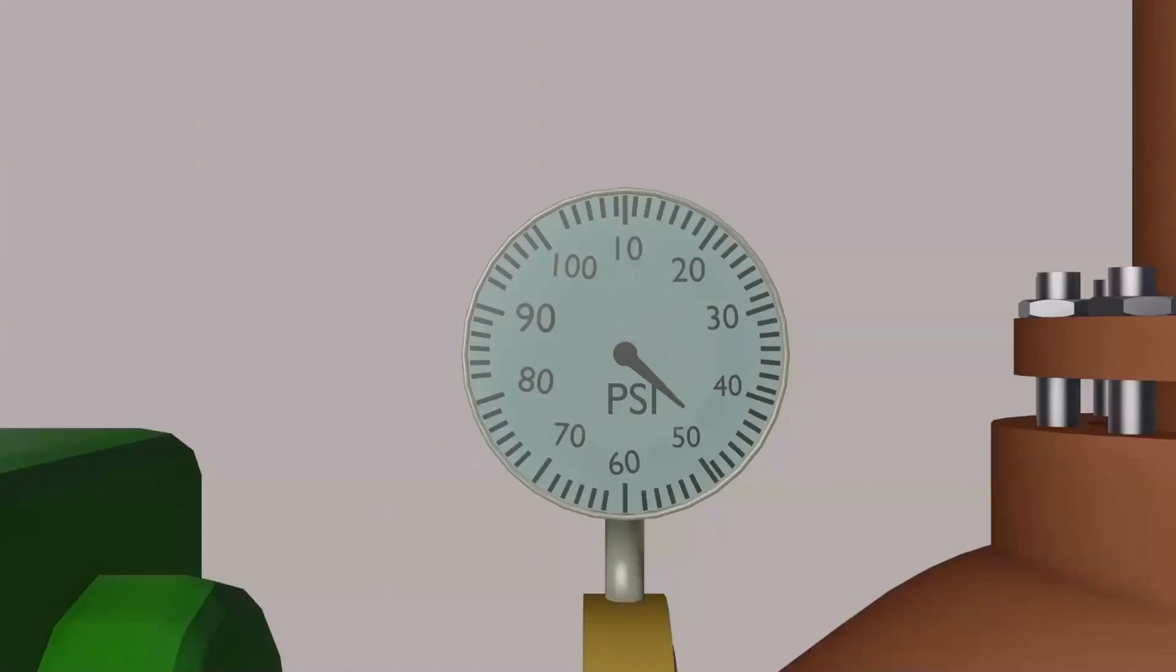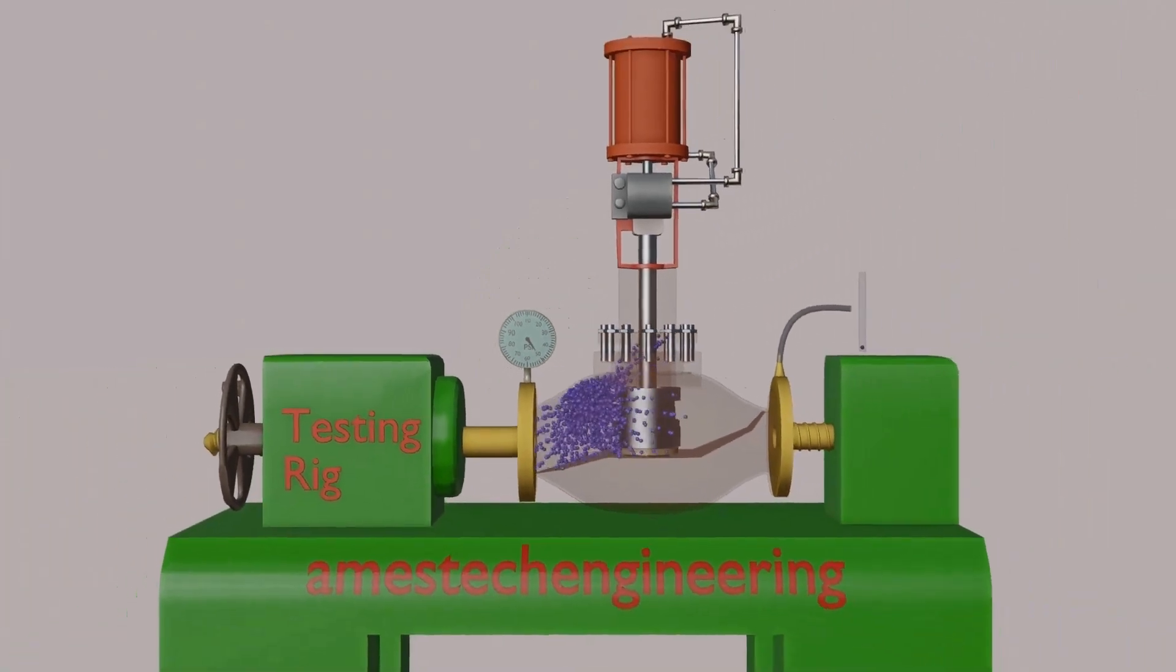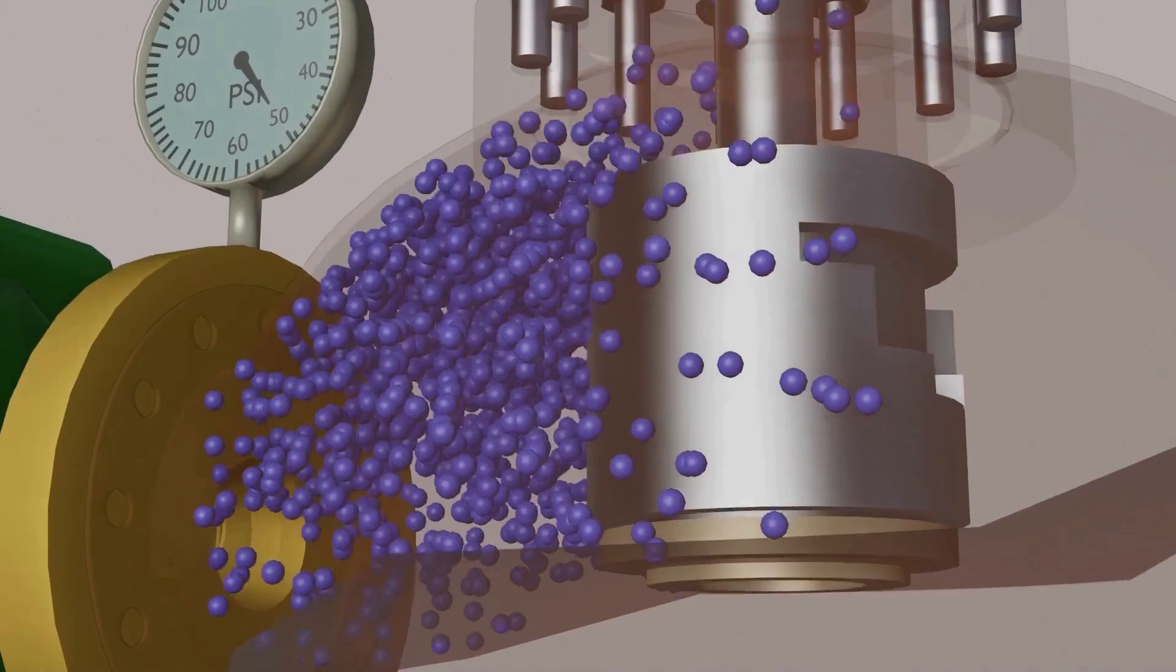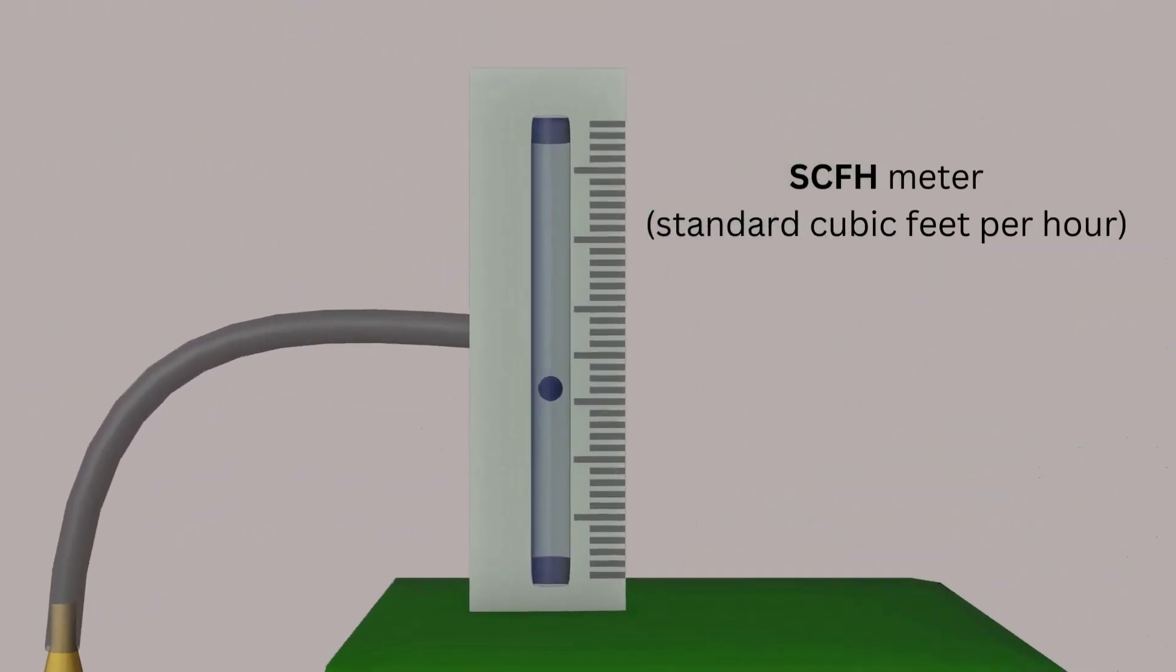Increase the pressure as per test standard at valve closed condition. Record the leakage observed using the SCFH meter connected to the outlet flange. That leakage value should be within the allowed leakage class.